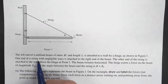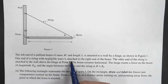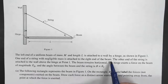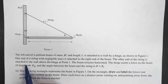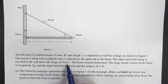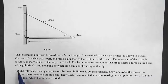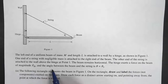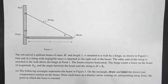One end of a string with negligible mass is attached to the right end of the beam. The other end of the string is attached to the wall above the hinge at point 1. The beam remains horizontal. The hinge exerts a force on the beam of magnitude FH, and the angle between the beam and the string is theta 1.